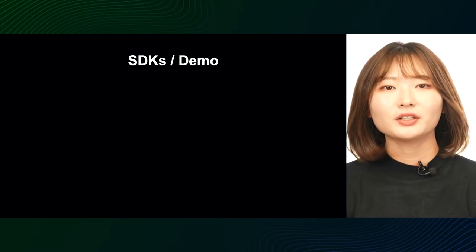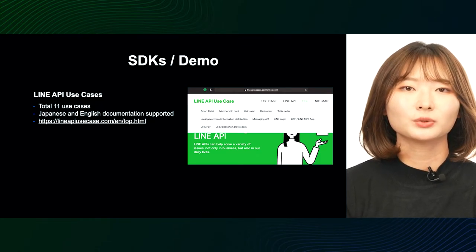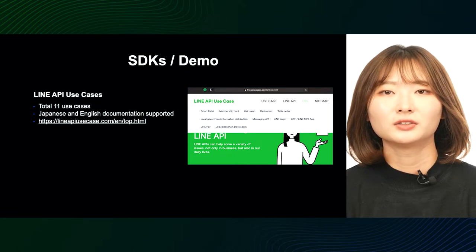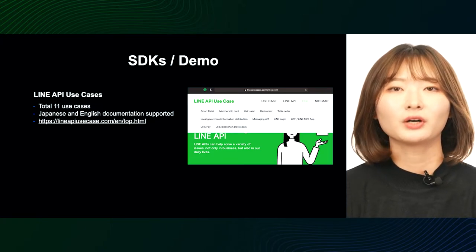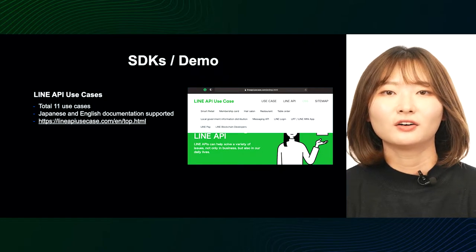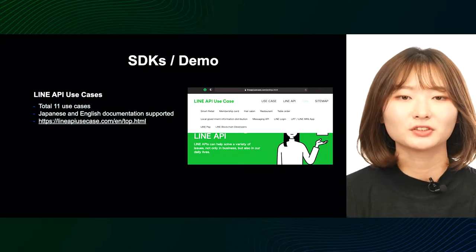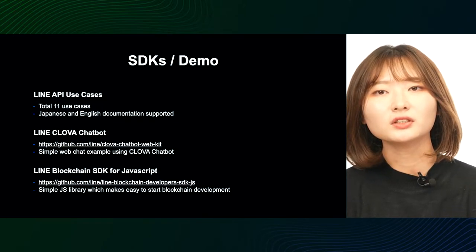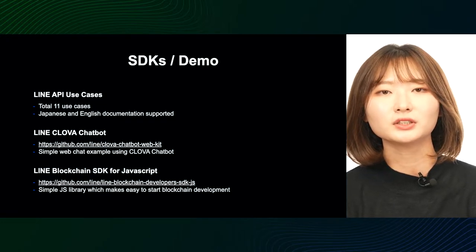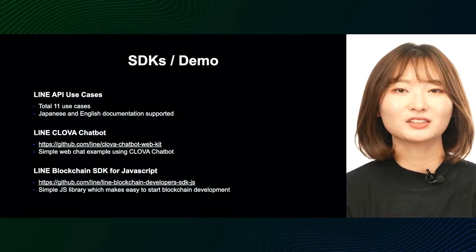This year, a lot of SDKs and demo codes using LINE API were also released. A total of 11 examples of LINE API use cases have been released, with example codes for various cases such as ordering, restaurant reservations, and login. Japanese and English documents are also supported. You can find more information by searching for LINE API use cases on LINE GitHub or visiting the website. Additionally, chatbot examples using LINE Clova and a LINE blockchain SDK in JavaScript to help you easily start blockchain development have also been released.